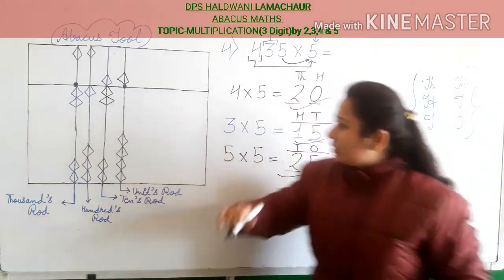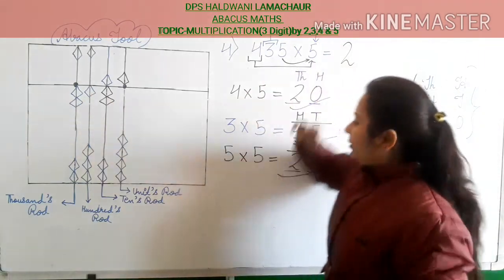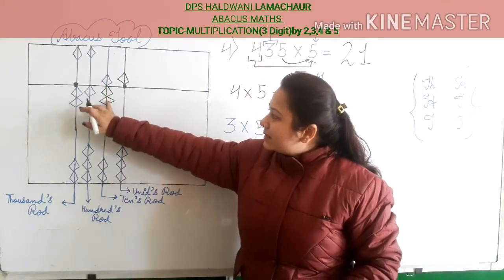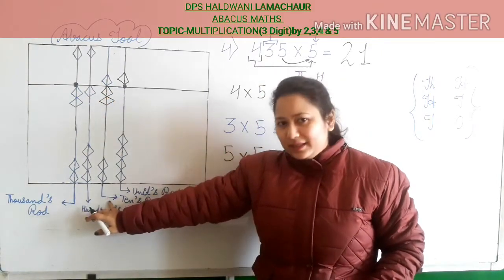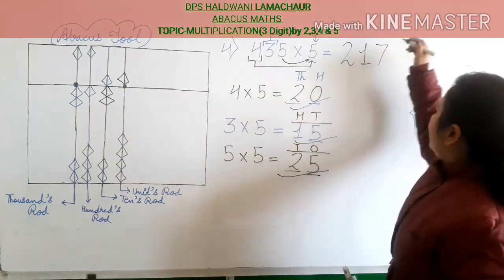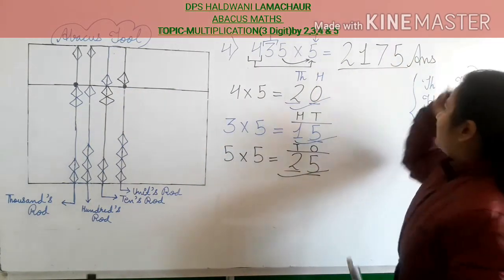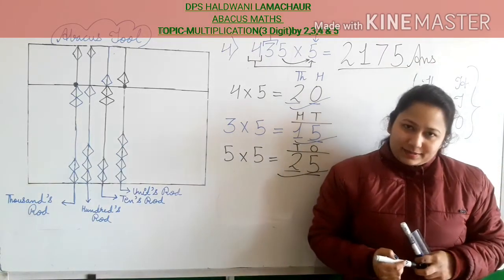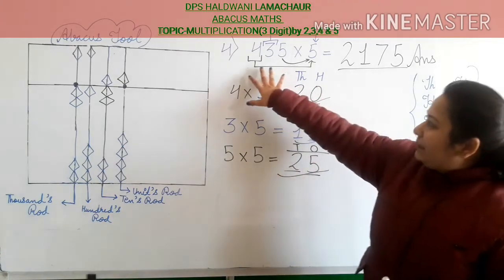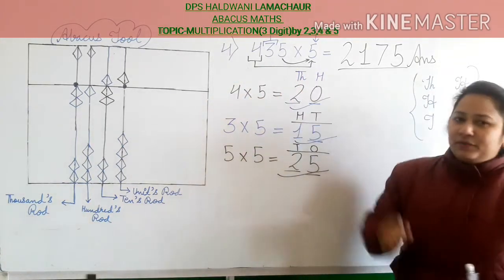Now count: 2 in thousands rod, 1 in hundreds rod, 5 in tens rod, and 5 in units rod. So 2175 is your answer. I hope students you get this sum — multiplication of a 3-digit number by 5. Now let's move to the fifth sum.